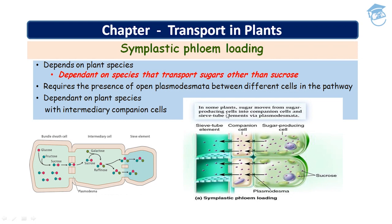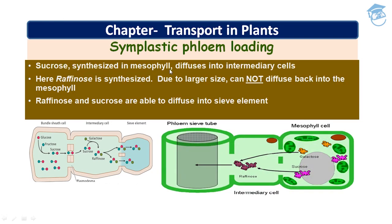In some plants, sugar moves from sugar-producing cells into companion cells and sieve tube elements via plasmodesmata — this is symplastic phloem loading. Raffinose is synthesized in the intermediary cells. Due to its larger size, it cannot diffuse back into the mesophyll. However, it can move from the intermediary cell to the sieve tube element. So raffinose and sucrose are both able to diffuse into the sieve tube element.